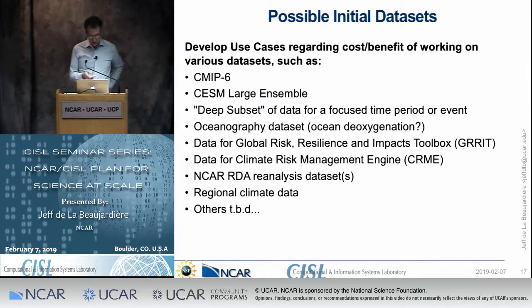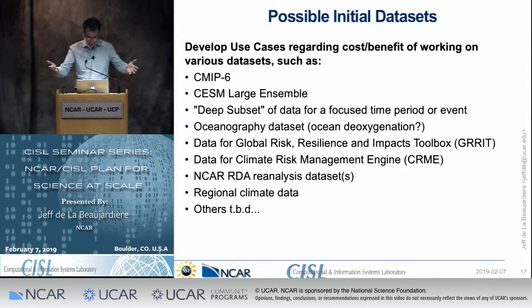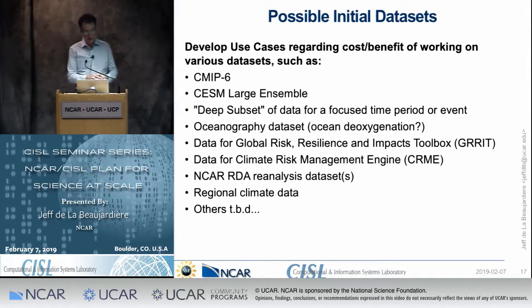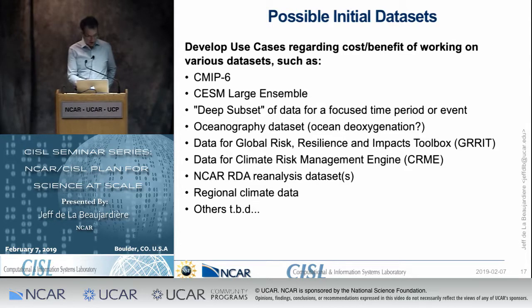Possible initial data sets — the document lists a few more than what's here. We'd like to develop some use cases that look at the cost-benefit of working on various data sets, because if we're going to put petabytes of data in the public cloud, we want to be sure people would actually be using it. CMIP6 and CESM would be kind of obvious candidates. I'm interested in the idea of a deep subset — all the data we can find for a specific event or month or year, from any source, not just NCAR. There's also interest in oceanography data, maybe supporting things like GRIT or CRME, the NCAR research data archive, research analysis data sets, regional climate data, and others. It'd be great to have at least one data set per NCAR lab in an initial round of work.